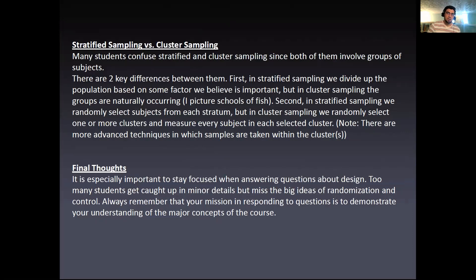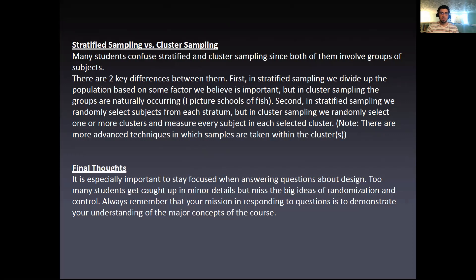Many students confuse stratified and cluster sampling since both involve groups of subjects. There are two key differences. First, in stratified sampling you divide the population based on some factor you think is important, but in cluster sampling groups are naturally occurring — for example, a school of fish naturally occurs. Second, in stratified sampling we randomly select subjects from each stratum, but in cluster sampling we randomly select one or more clusters and measure every subject in each cluster. There are more advanced techniques in which samples are taken within clusters, but we don't really get into those.